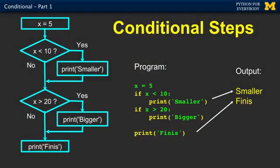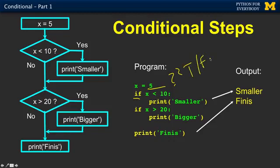The key to this is the if statement. The if statement is the reserved word that indicates we're going to do something conditionally, and it's not that hard to read. The if statement has a condition — it's really a question. Unlike x equals five, which changes the value of x, x less than 10 is asking a question: is x less than 10? That returns true or false. Because x is five, x is indeed less than 10, so it's true.